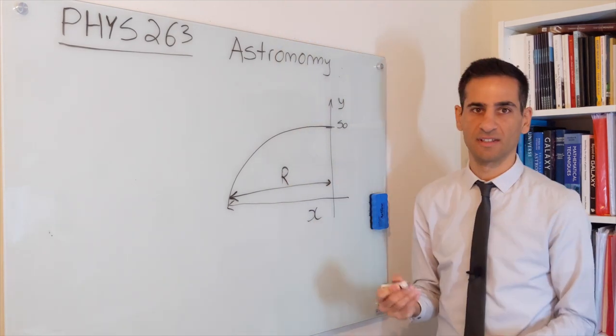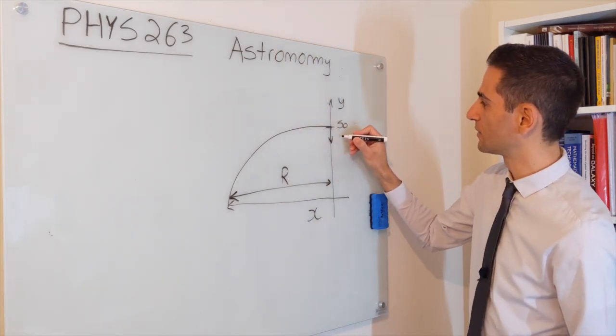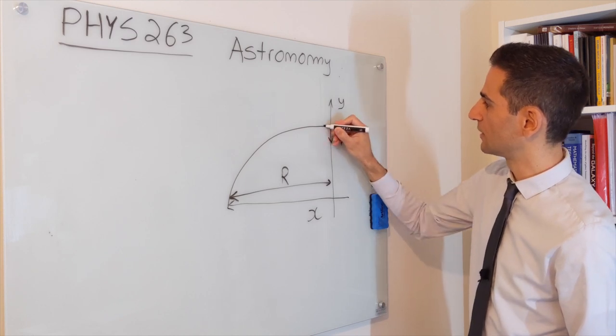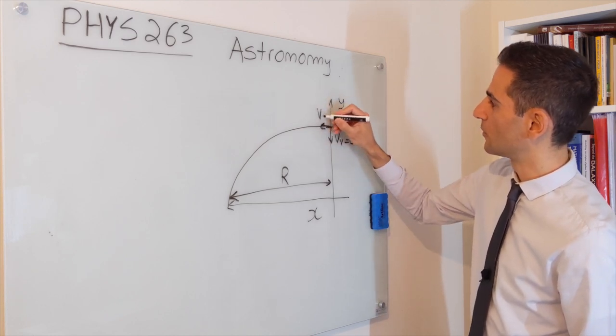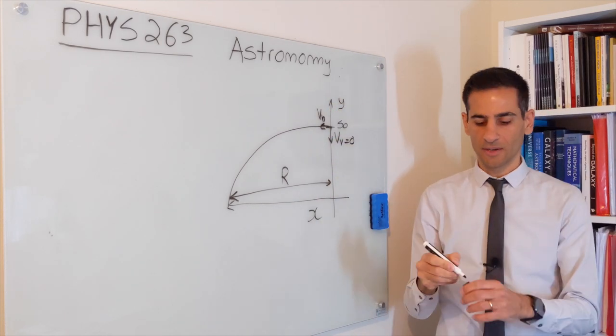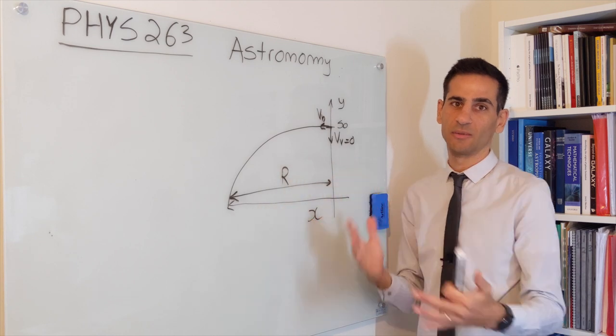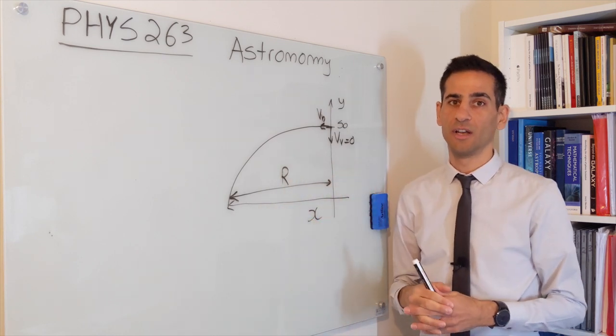This is essentially the range. And at the start, the initial vertical velocity was zero. And I sent it with some horizontal velocity. Which, I guess, if I go to the video and I measure this, I will know exactly how much it was.